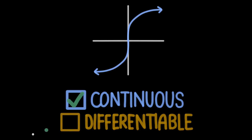Another way that a curve can be continuous but not differentiable is for it to have a slope so steep that it isn't able to be defined. If the tangent line is perfectly vertical, then differentiating at that point would be like trying to find the slope of a vertical line. Since the slope of a vertical line is undefined, a curve isn't differentiable at a vertical tangent line.